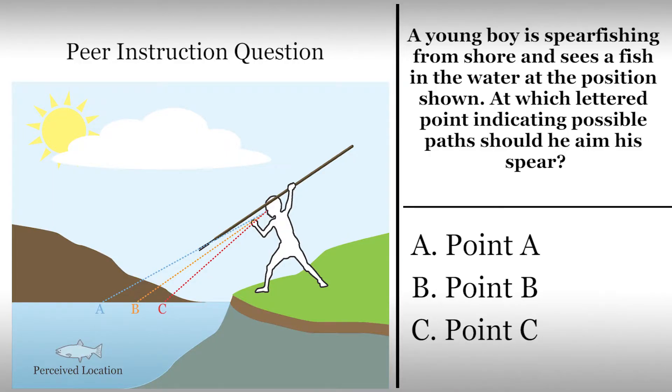Let's check our understanding with a peer instruction question. Classroom students should follow normal procedures or instructor guidelines. Viewers not in a classroom should record your vote and explain your reasoning on a piece of paper. Please pause this video and answer the question.